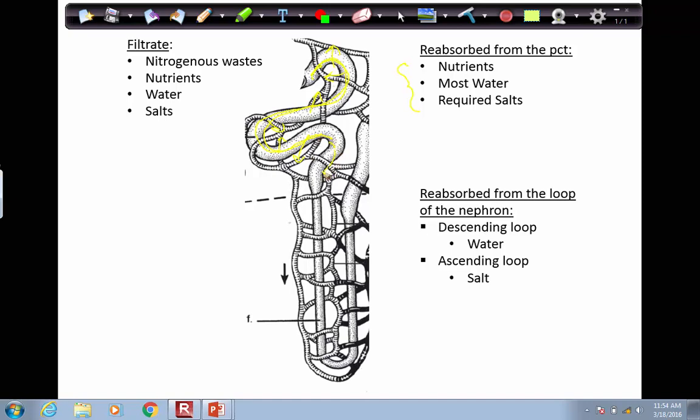The loop of the nephron also plays a role in reabsorption. As the filtrate goes down the descending loop of the nephron, water will be reabsorbed. As the filtrate then travels up the ascending loop, salt will be reabsorbed.